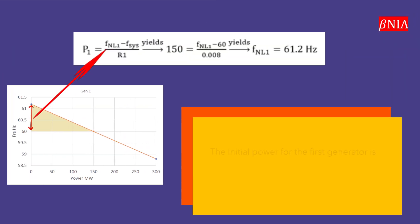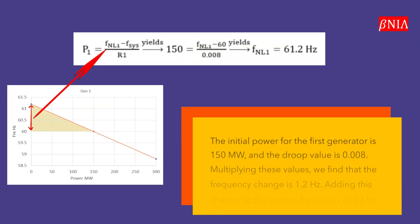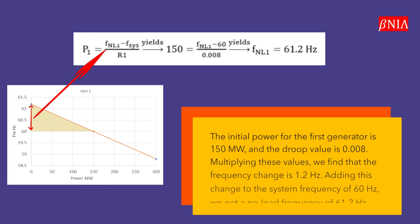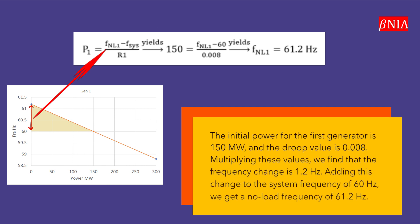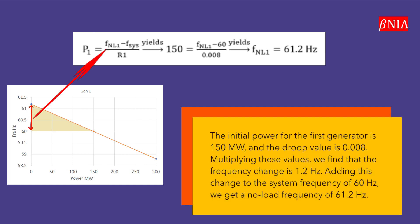The initial power for the first generator is 150 MW, and the droop value is 0.008. Multiplying these values, we find that the frequency change is 1.2 Hz. Adding this change to the system frequency of 60 Hz, we get a no-load frequency of 61.2 Hz.